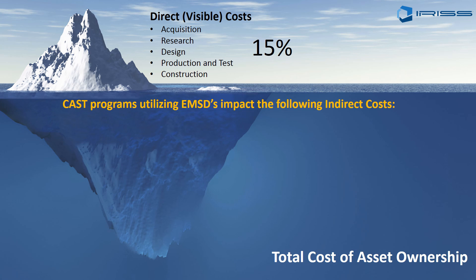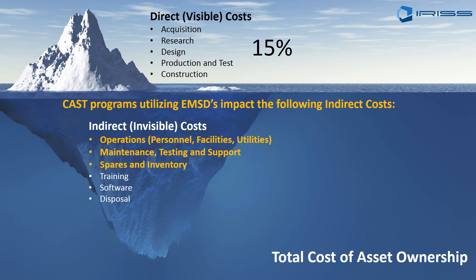Where CAST programs utilizing EMSDs impact indirect costs is across operations, personnel, facilities, utilities, maintenance testing, support, spares, and inventory. Because we're doing routine surveillance and only maintaining equipment as and when it needs it, the cost of calendar-based or routine maintenance goes away. We make it a quick, slick, and cost-effective way of gathering this data, and we can control spares and inventory by ordering fast-moving items as and when needed. In total, 75% of those indirect costs can be significantly impacted by utilizing a CAST and EMSD program.